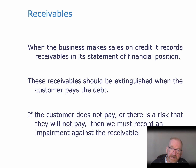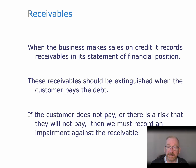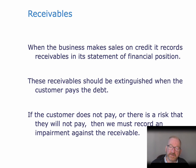However, accounting rules require us to recognize that not all customers will pay their debts. The accounting rules in relation to this have become increasingly complex over the years. It used to be governed by IFRS 9, which has a very complex set of rules about how you decide whether some of your customers are not going to pay. We are just going to look at the mechanics of how you do the double entry accounting for creating an allowance for credit losses.